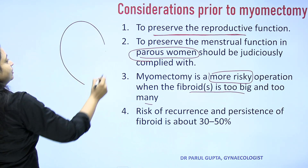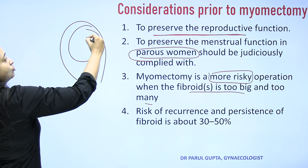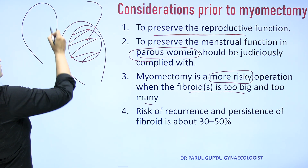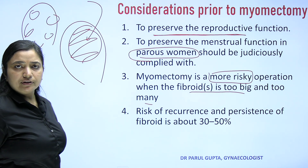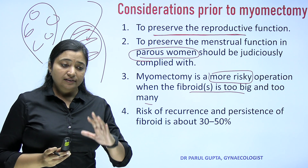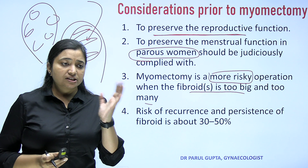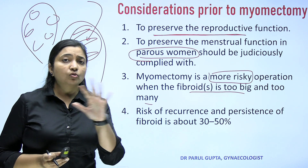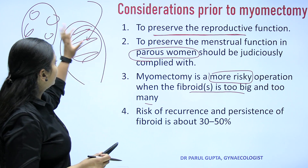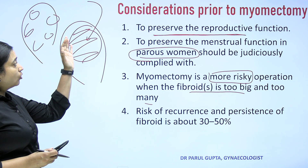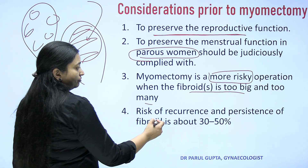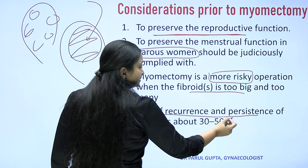Myomectomy is a more risky operation compared to hysterectomy. If the uterus has large or multiple fibroids, removing them leaves a significant cavity. As a surgeon, you must assess whether this surgery is riskier than hysterectomy. Hysterectomy removes everything, leaving no cavity behind, but myomectomy involves enucleation and you must completely obliterate the cavity for good results.